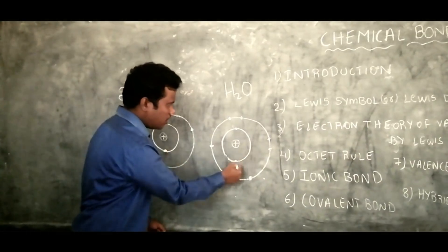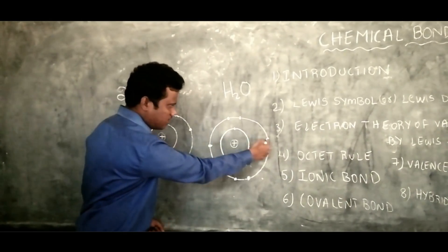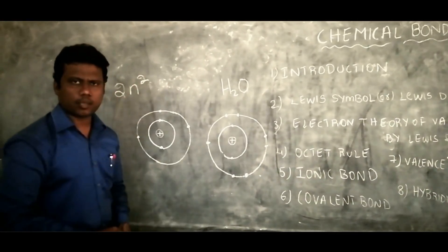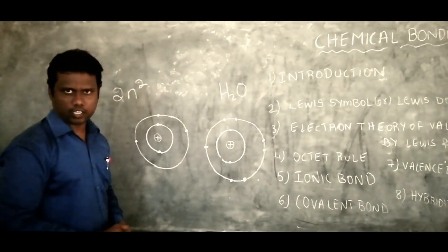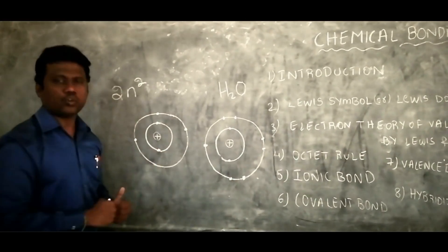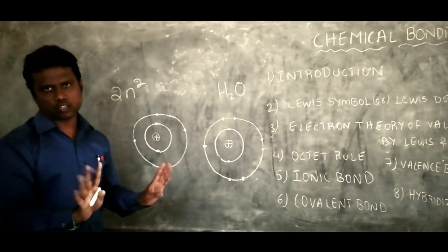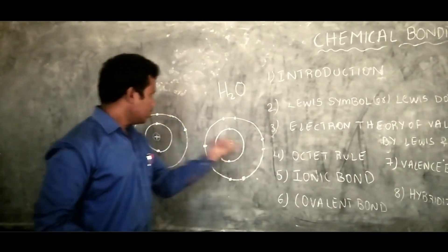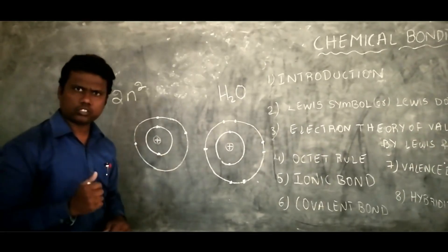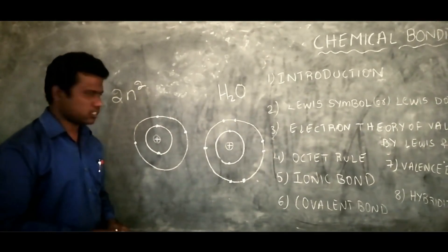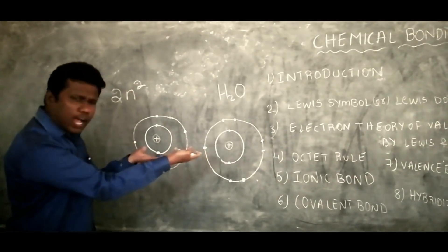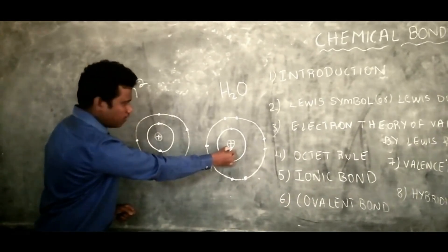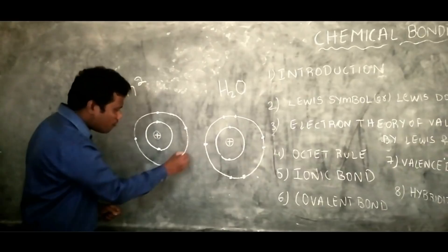In the second atom, we have two shells: in the first shell 2 electrons, and in the second shell 7 electrons. The plus sign in the middle represents the positive nucleus. If I bring these two atoms close to each other, will they combine? If they combine, a chemical bond forms. If not, what force prevents them?